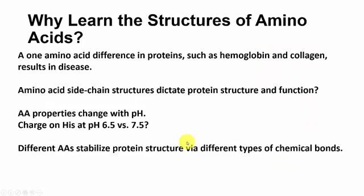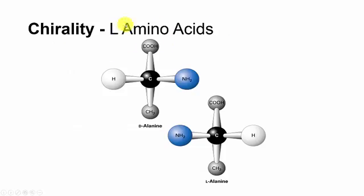Why learn the structures of the amino acids? One amino acid difference in proteins such as hemoglobin and collagen can result in disease — we'll talk about that later. Amino acid side chain structures dictate protein structure and function. Amino acid properties change with pH, so the charge on a histidine at pH 6.5 versus 7.5 is important. Different amino acids stabilize protein structure via different types of chemical bonds. The amino acids in the human body are all L amino acids, so we'll talk about L chirality — L instead of D. Some D amino acids do occur in the cell wall of bacteria.